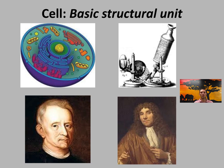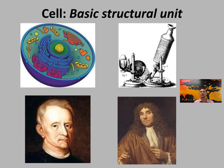Cell theory — that all organisms contain cells, or that cells are the smallest unit of life — was really based off of inductive reasoning. These scientists, as well as others, looked at different tissues and samples: cork, embryos, the pith of elder plants, and the cartilage of frogs, and noticed that all of these different things had cells. The name 'cell' actually originated because it looks like a jail cell — an enclosed capture. Identifying that all of these different samples had cells led to the inductive reasoning that cells are the basis of life.